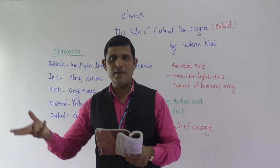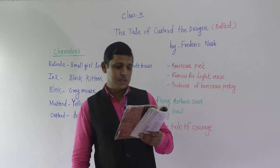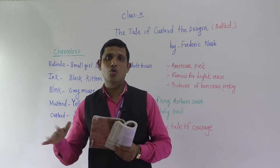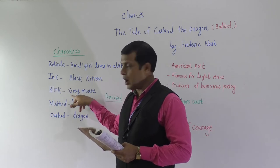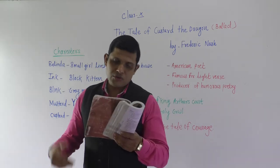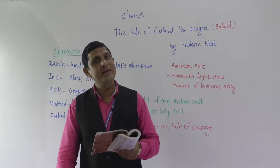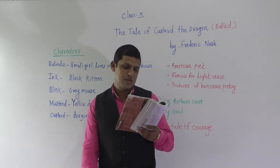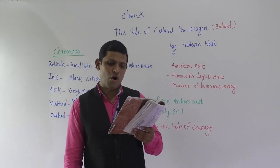In the first stanza, the poet talks about Belinda and her four pets. In the second stanza, the poet tells the names of each pet. The little black kitten was called Ink, the little gray mouse was called Blink, the little yellow dog was sharp as Mustard, but the dragon was a coward and she called him Custard.